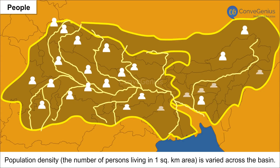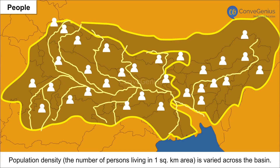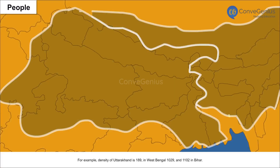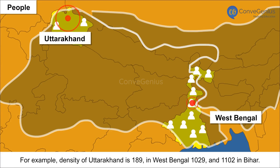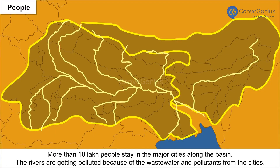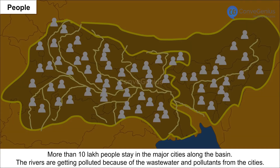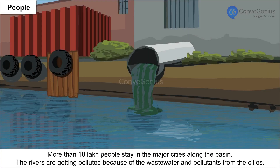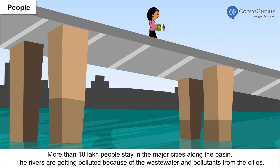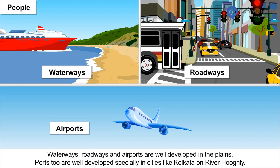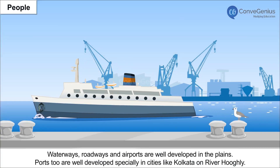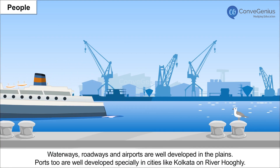People and Population Density. The number of persons living in one square kilometre varies across the basin. For example, density of Uttarakhand is 189, West Bengal is 1029, and Bihar is 1102. More than 10 lakh people stay in the major cities along the basin. The rivers are getting polluted because of wastewater and pollutants from the cities. Waterways, roadways and airports are well developed in the plains. Ports too are well developed, especially in cities like Kolkata on River Hooghly.